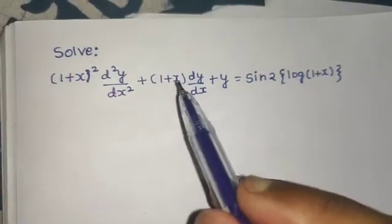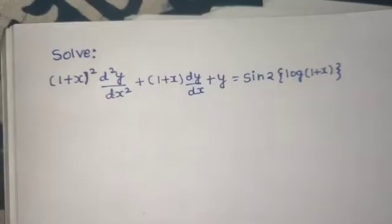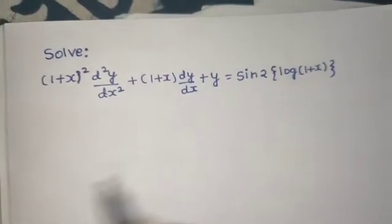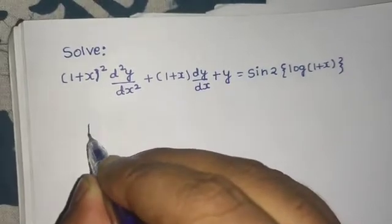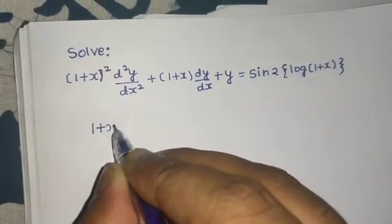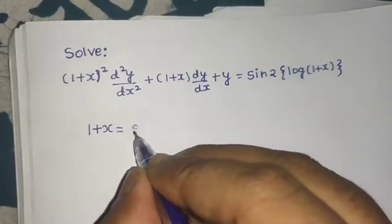Power is 1, then we have the first order derivative. So in this type of question, what we do is simply replace this 1+x by substituting it as e^t.